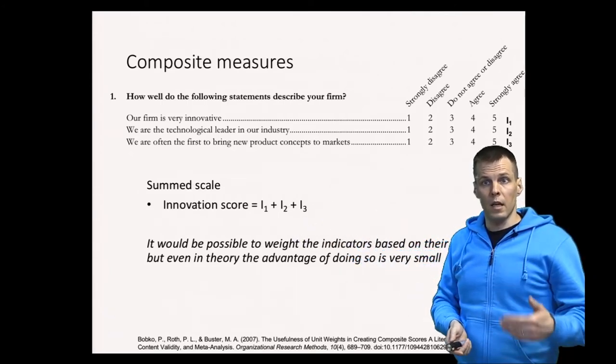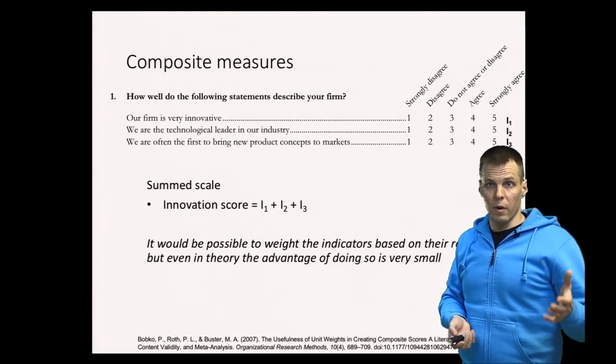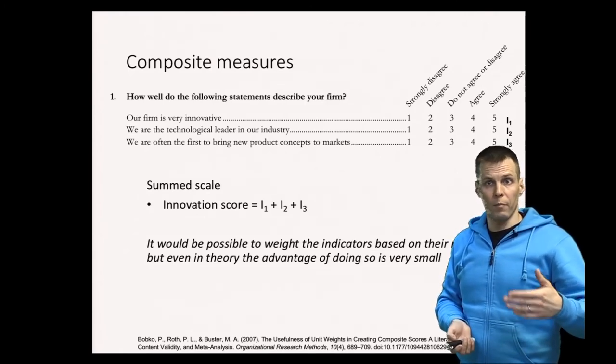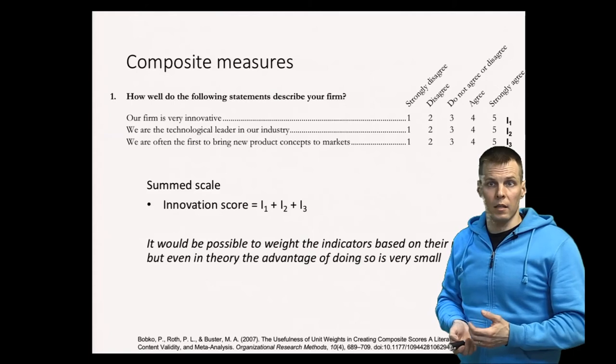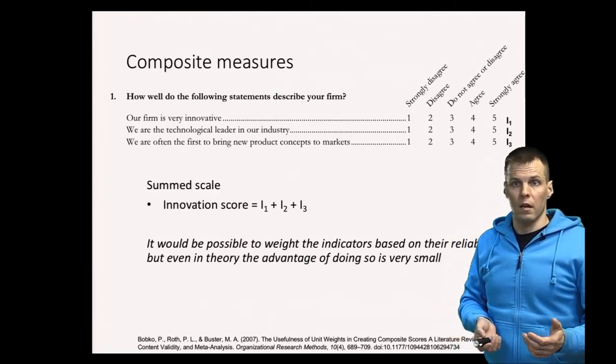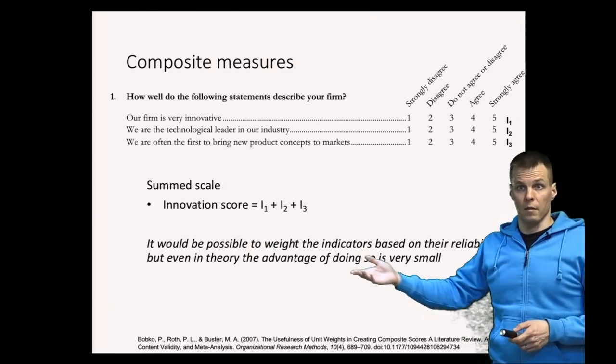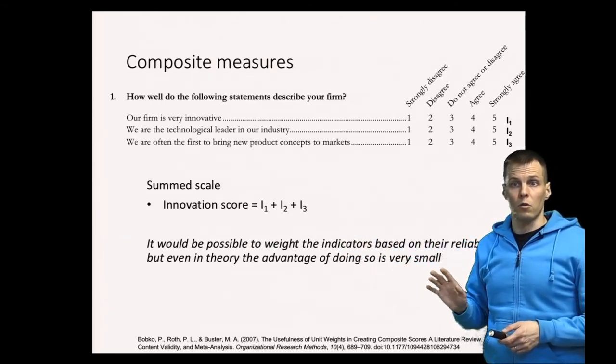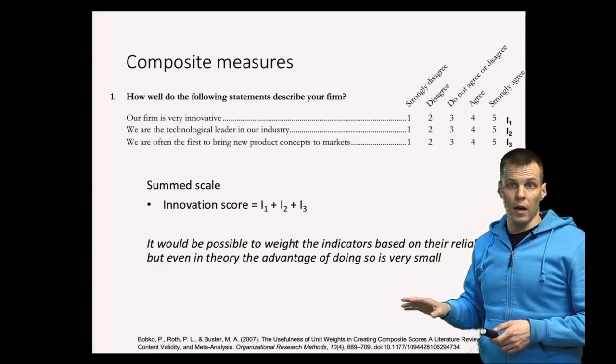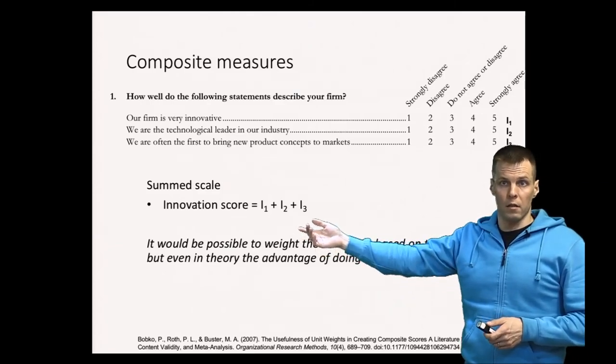It's theoretically possible to increase the reliability of a sum by introducing weights for these indicators, so that you weight one indicator a bit more than others based on the reliability. But the advantages of that approach are trivial, and therefore we simply take a mean or the sum. That's the practice, and also all the reliability indices that you would normally apply assume that it is an unweighted sum that's your scale score.